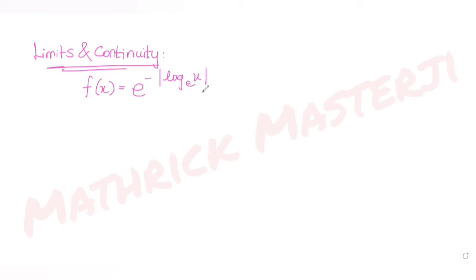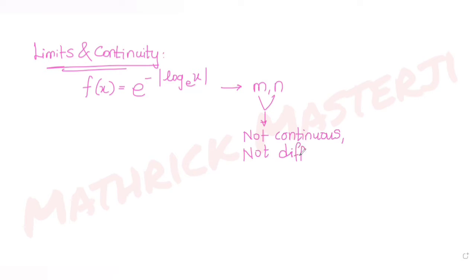Hi guys, I hope you are all doing well. Today's question is from the topic of limits and continuity. The function f(x) is given as e raised to negative mod of log x to the base e — basically the natural log of x. The question tells us m and n are respectively the number of points at which f(x) is not continuous and not differentiable, and we need to find m plus n. The answer choices are 0, 1, 2, and 3.